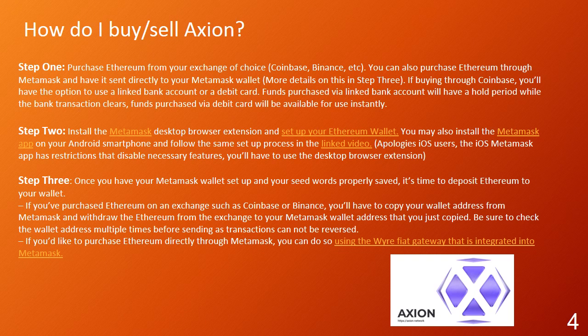Step 2: Install the Metamask desktop browser extension and set up your Ethereum wallet. You may also install the Metamask app on your Android smartphone and follow the same setup process in the linked video. Apologies iOS users — the iOS Metamask app has restrictions that disable necessary features, so you'll have to use the desktop browser extension. Step 3: Once you have your Metamask wallet set up and your seed words properly saved, it's time to deposit Ethereum to your wallet.